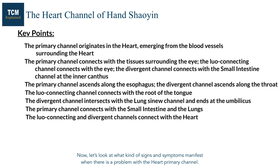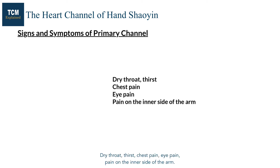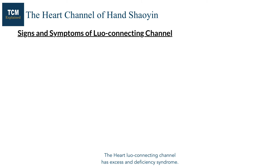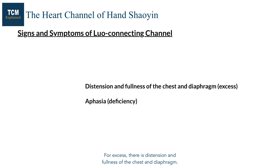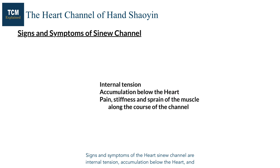Now let's look at signs and symptoms that manifest when there is a problem with the heart primary channel. The heart luo connecting channel has excess and deficiency syndromes. For excess, there is distension and fullness of the chest and diaphragm. For deficiency, there is aphasia. Signs and symptoms of the heart sinew channel include internal tension, accumulation below the heart, and pain, stiffness, and sprain of the muscles along the course of the channel.